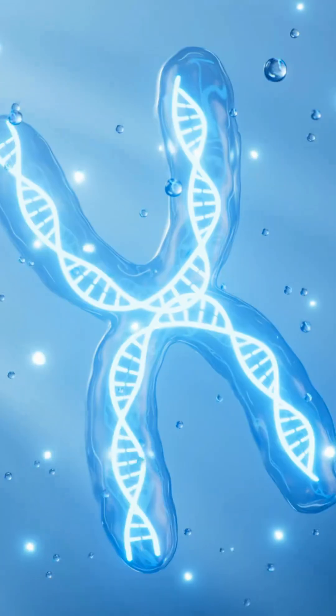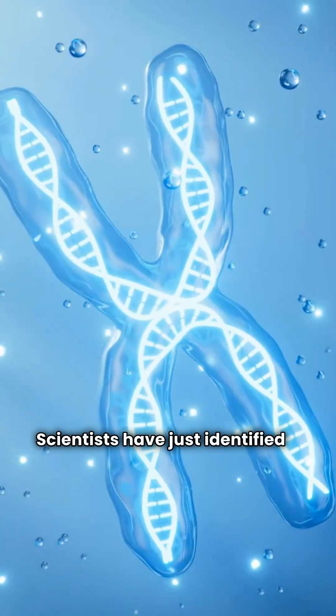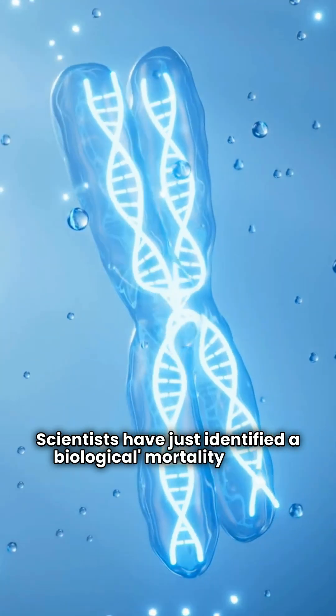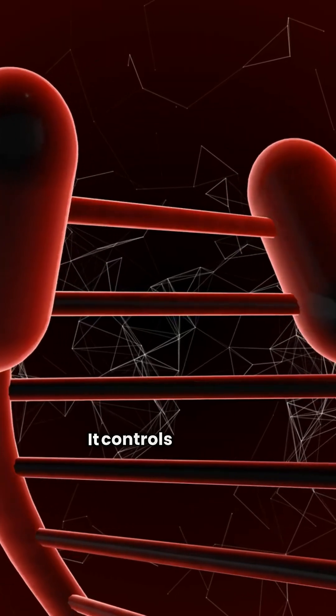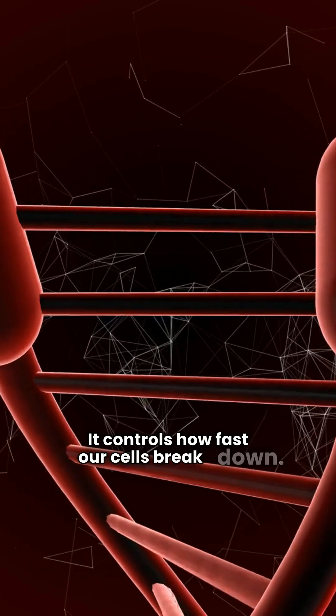What if aging wasn't random? Scientists have just identified a biological mortality timer. It controls how fast our cells break down.